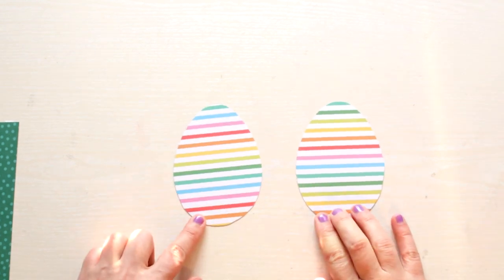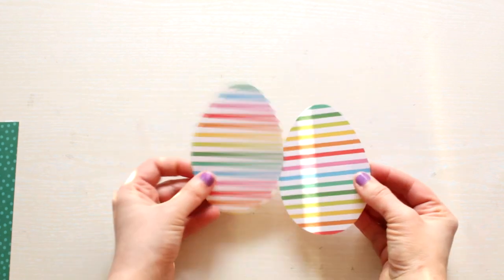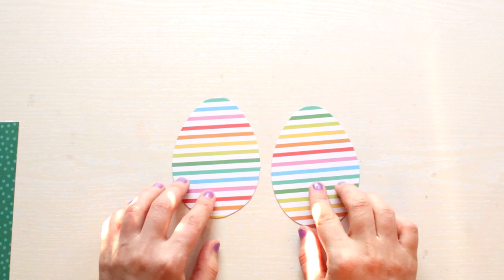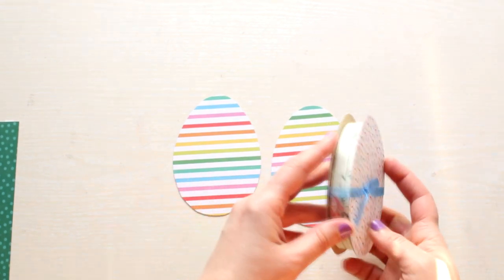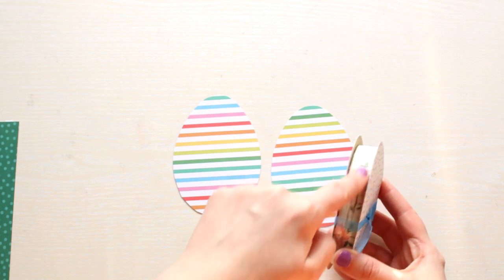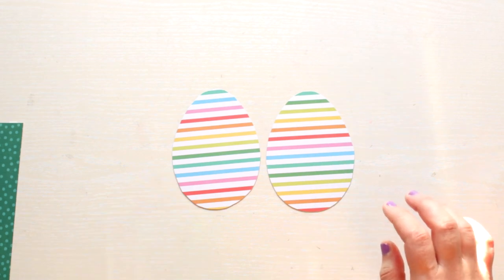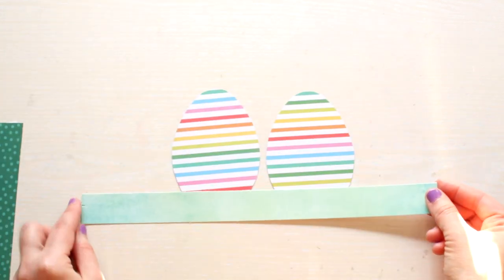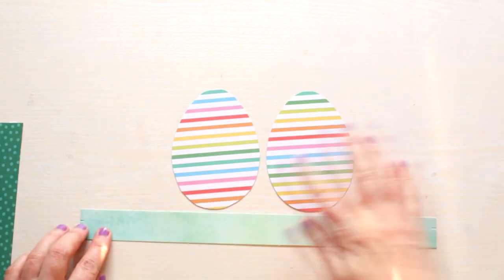So this is how the front and the back of the box looks like so far. Now we will need to create the side of the box. For this step we are going to use the paper strips which are 12 inches long by 1 inch wide.